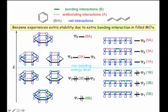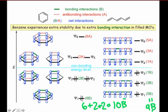In hexatriene, we've identified a total of nine net bonding interactions among all the filled molecular orbitals. In benzene, among its filled orbitals, we can count ten net bonding interactions total.